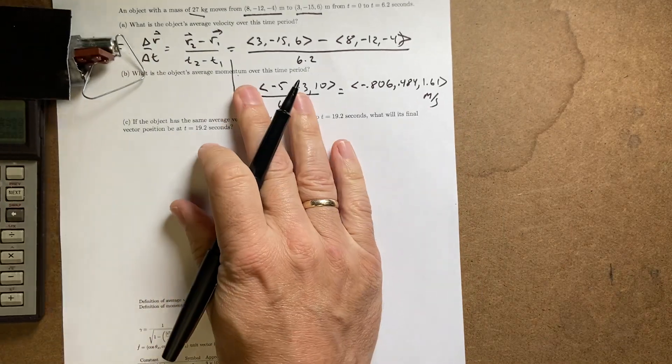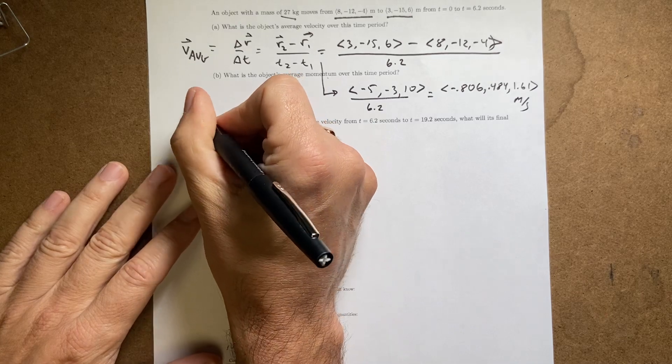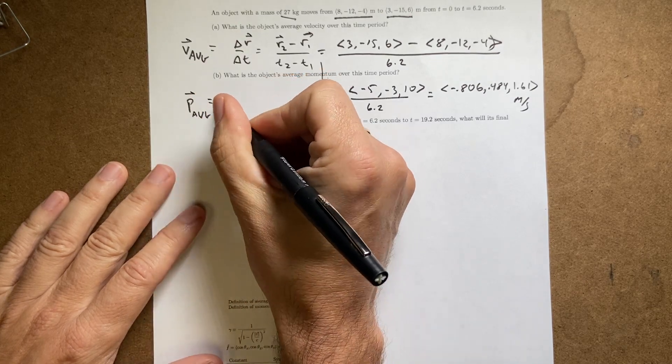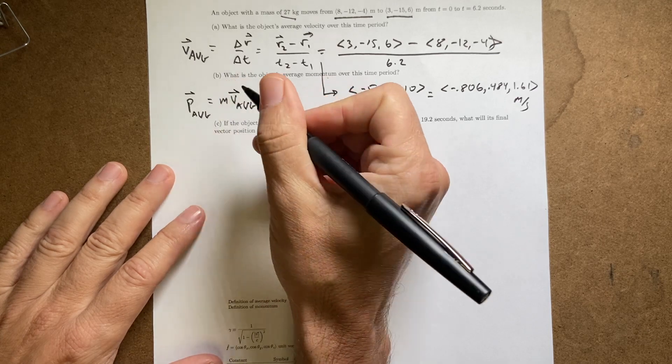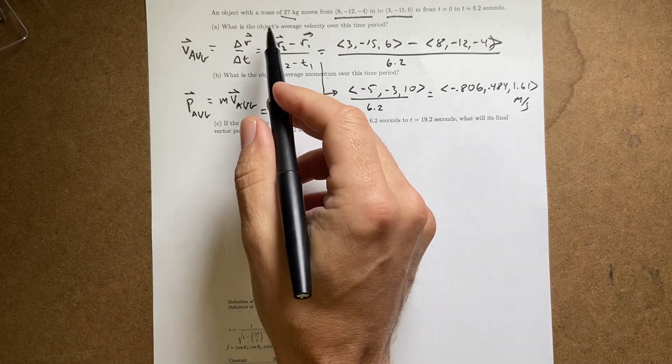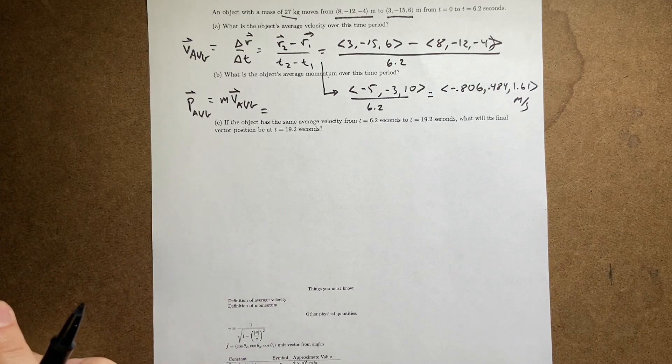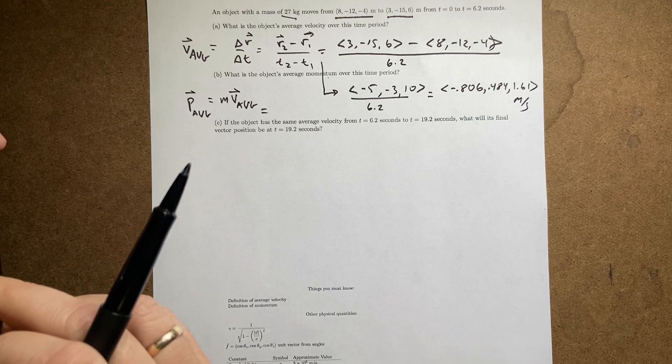Now, this next part says what's the object's average momentum. So momentum average is just going to be mass times the average velocity as a vector. So I can multiply this by the mass of 27 kilograms.